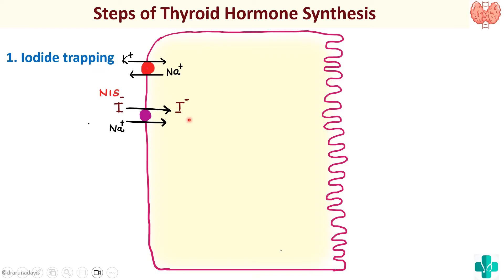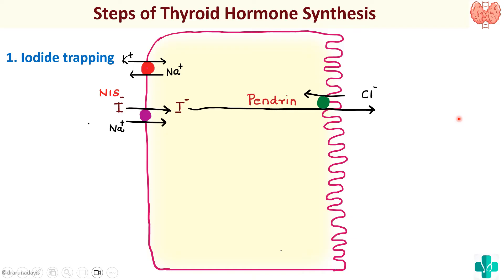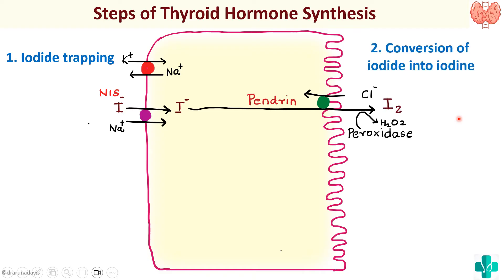Once the iodide is inside the follicular cell, it has to be taken to the other side of the cell for hormone production. We have another channel for that called pendrin, which is an iodide-chloride exchanger. Now the iodide is on the other side of the cell, but it must be converted to iodine for thyroid hormone production. For that we have an enzyme called peroxidase which converts iodide to iodine. This is our second step: conversion of iodide to iodine with the help of peroxidase.